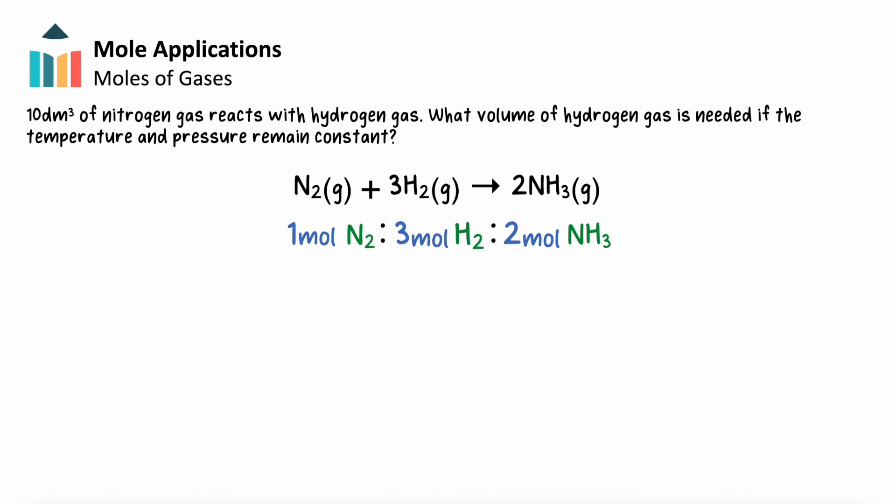Similarly, we can do this with volumes of gases. If 10 decimeters cubed of nitrogen reacts with hydrogen, what volume of hydrogen gas is needed if the temperature and pressure remain constant?